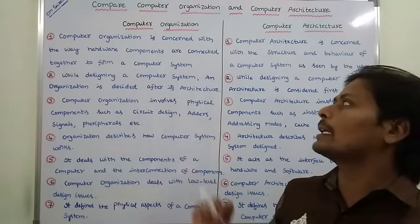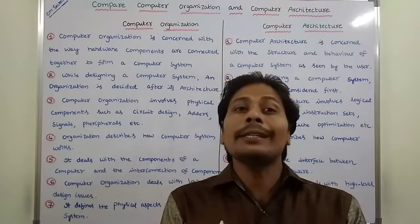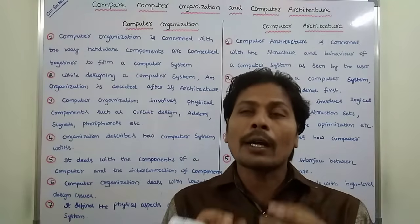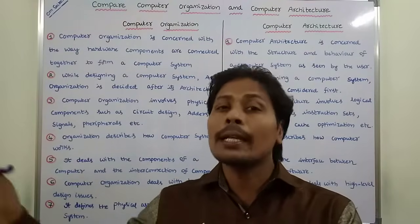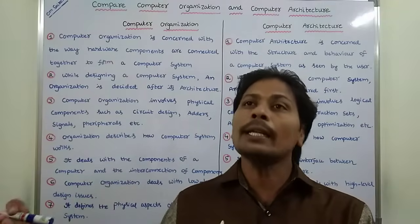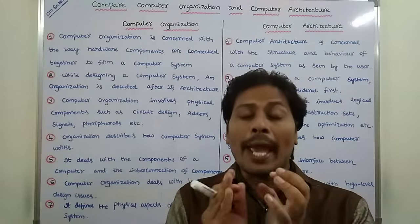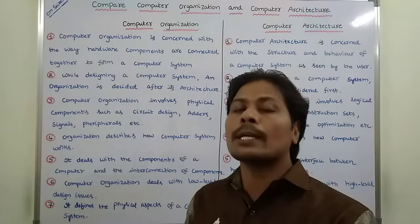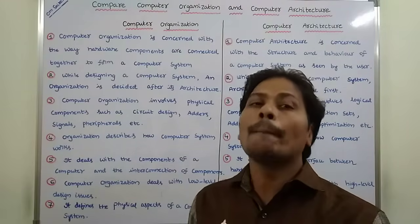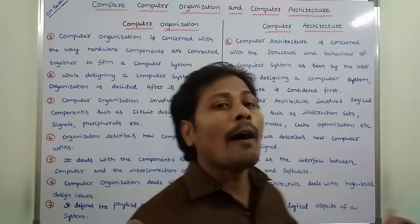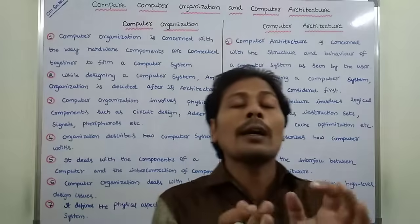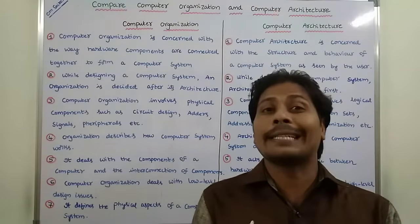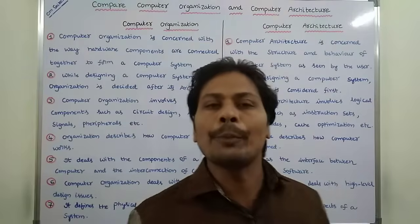Fourth point: Organization describes how the Computer System works — how it works to perform a particular task, to execute a particular program. Whereas, Architecture describes how the Computer System is designed. How the Computer System is designed is described by Computer Architecture.